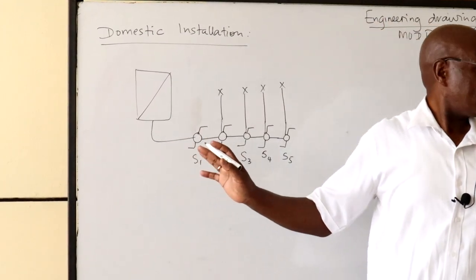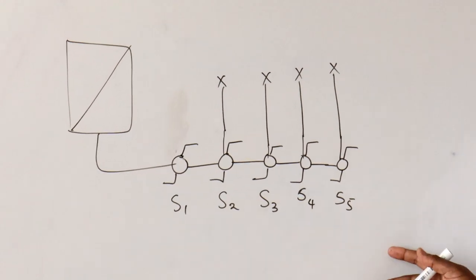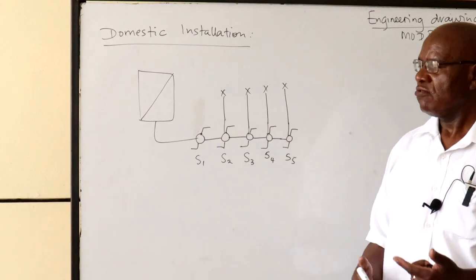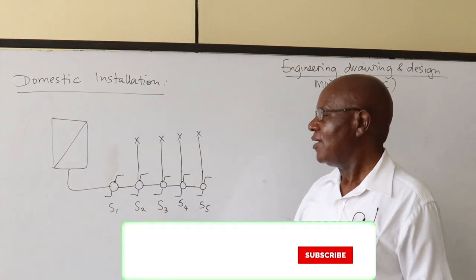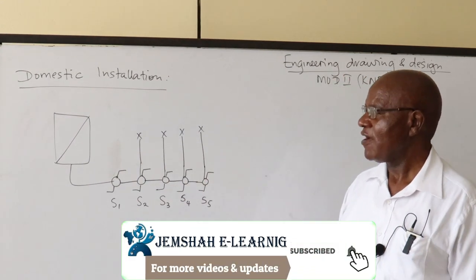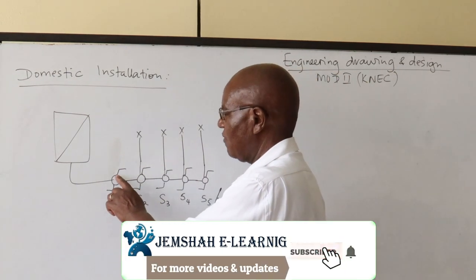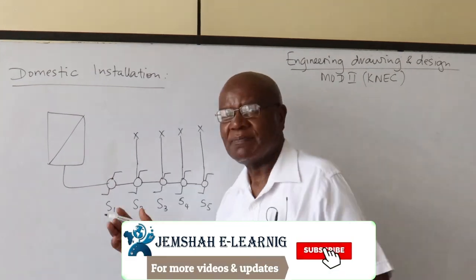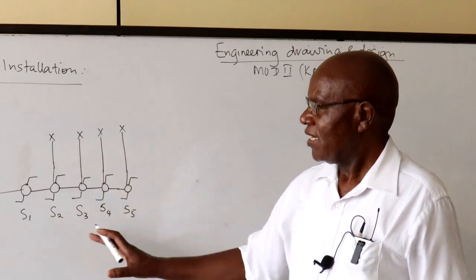In the design brief I gave you, I showed you four single-pole two-way switches. I tried to redesign with four switches to suit the customer's conditions, but I found I could not cope with four, so I had to add a fifth. That tells you that sometimes a customer may have their own idea of how things should be done, but sometimes you may need to do some re-modifications.